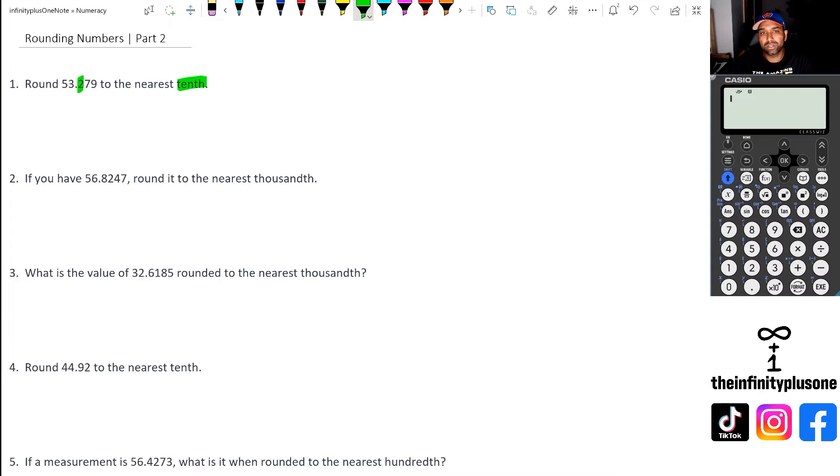Because you know how you have in place values, you've got ones, tens, and then hundreds, and it keeps going. But when you go after the decimal point, you don't actually have a one-th. You actually have a tenth, a hundredth, a thousandth, and so on.